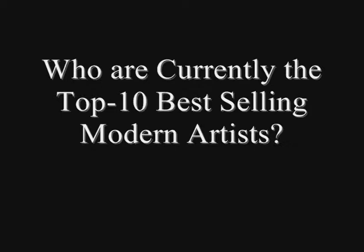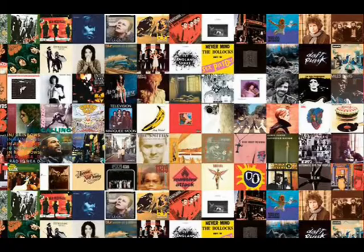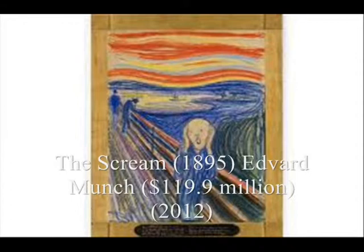Who are currently the top 10 best-selling modern artists? To give you an idea of who are the most valuable artists in today's art market, here are the top 10 prices for paintings sold at public auction. Number one: The Scream, 1895, by Edvard Munch — $119.9 million as of 2012.